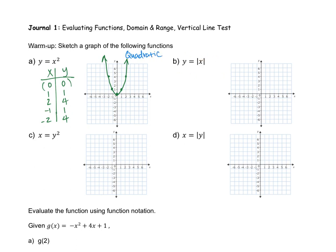Our next equation you might recognize as well. It has those vertical lines — we call these absolute value. So we are going to be drawing an absolute value function. If you don't remember what it looks like, just make a table. I'm going to use the same x values as before. Remember, those absolute value signs make every number positive. So if I throw in 0, I get 0. If I throw in 1 or 2, I get the same number back. If I plug in a negative number, I get back a positive 1 or a positive 2.